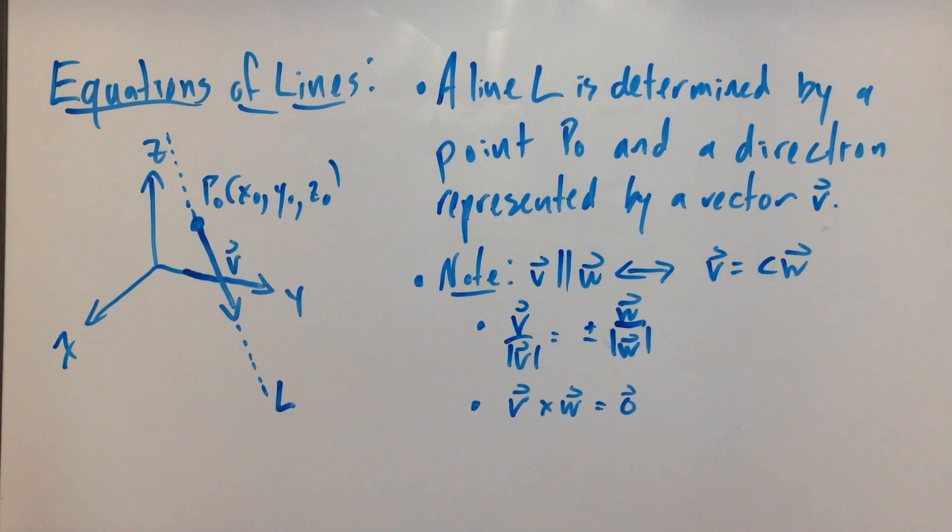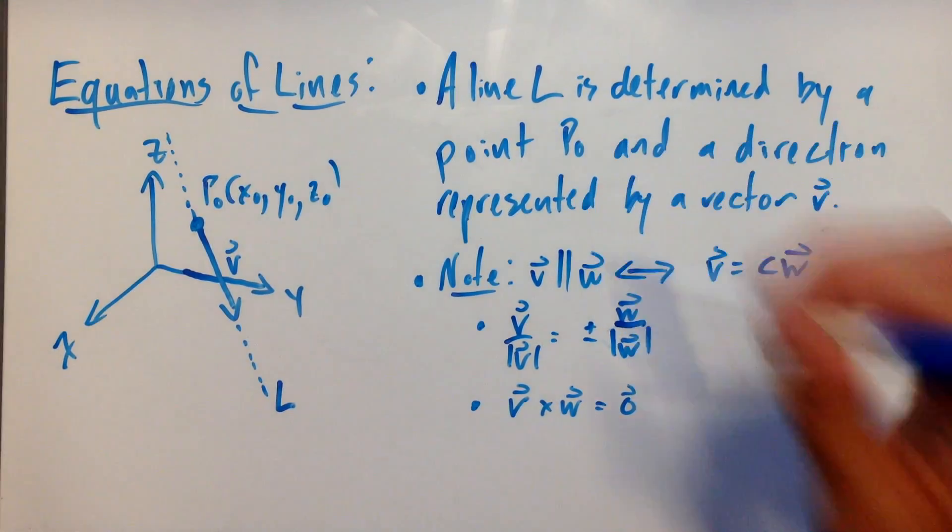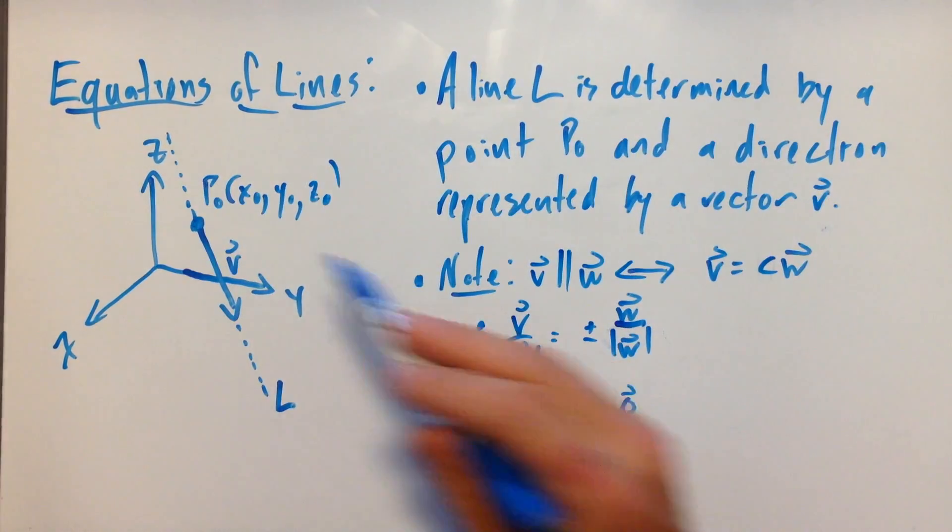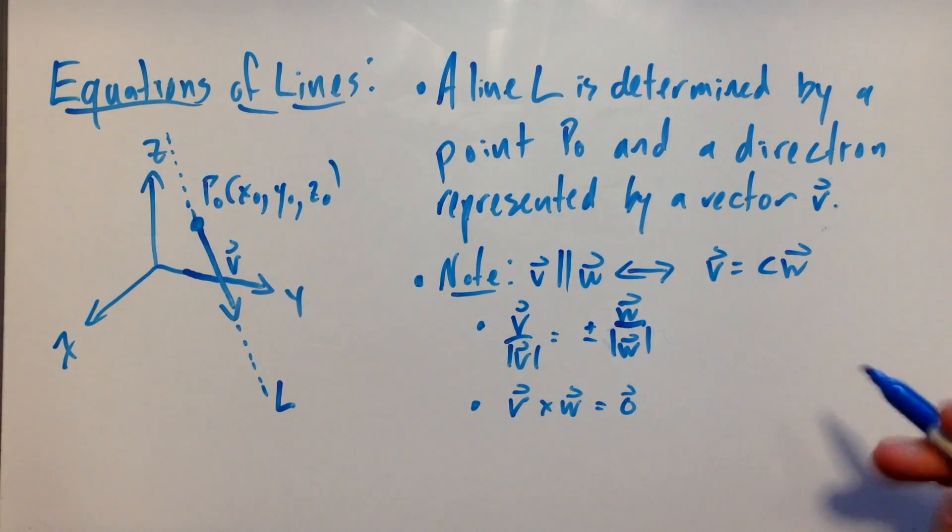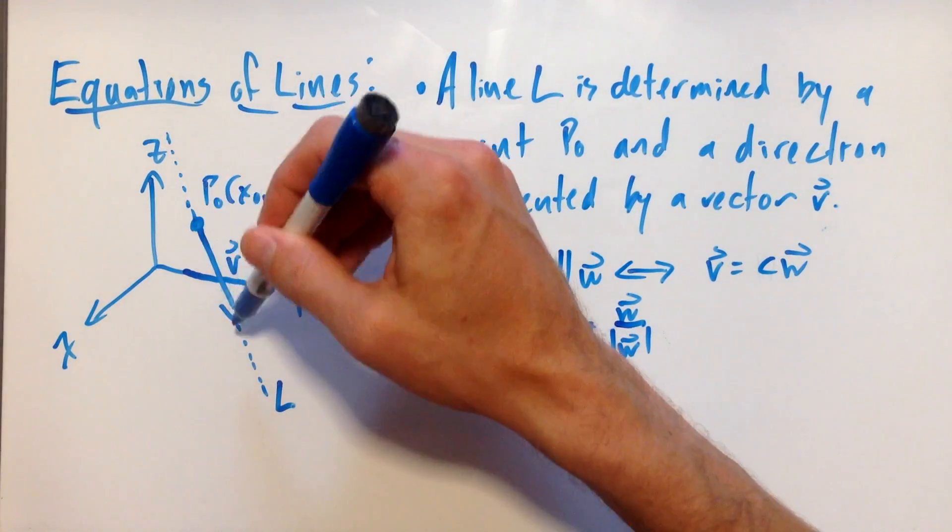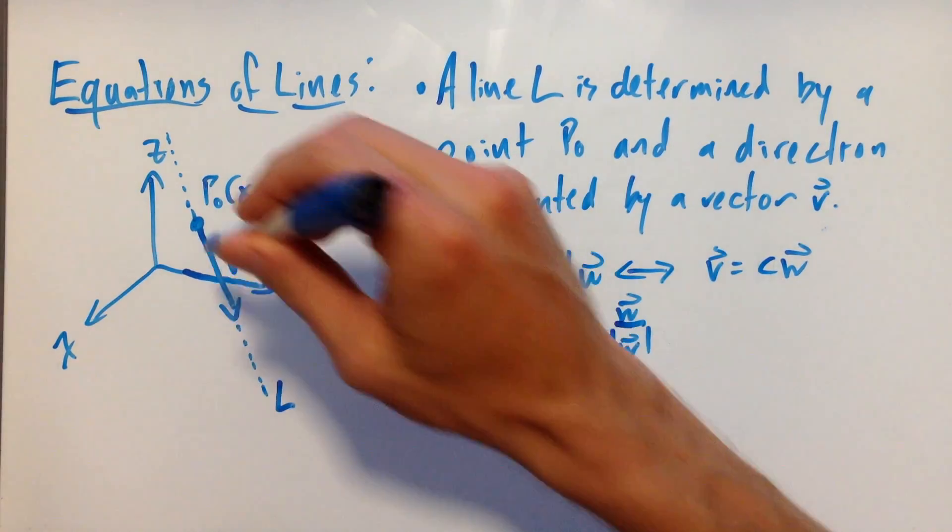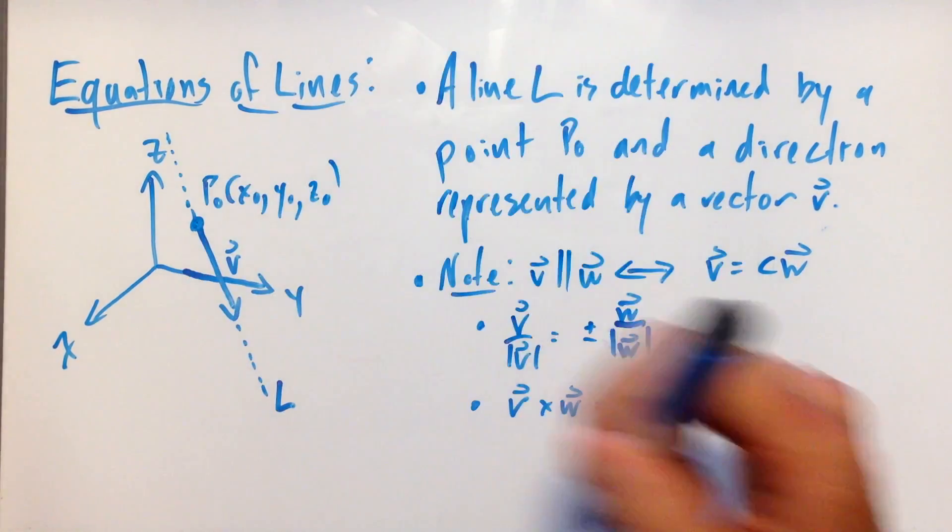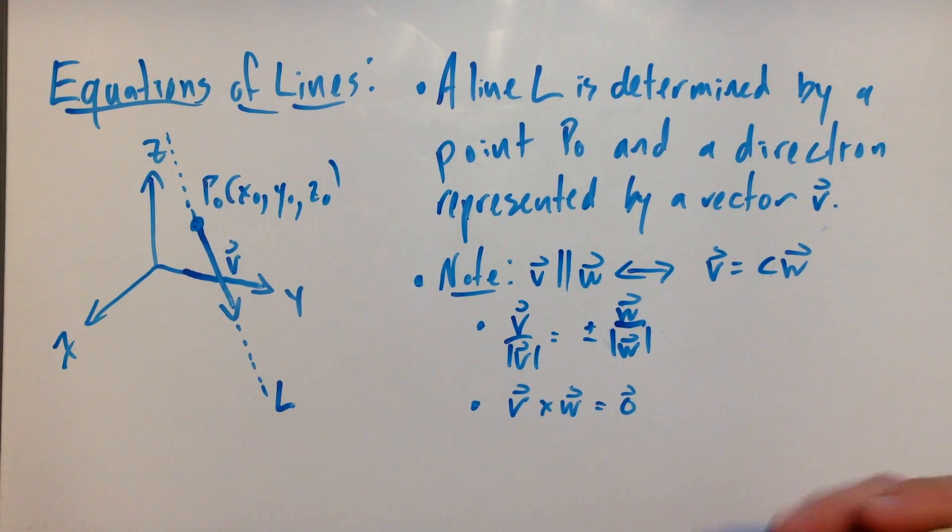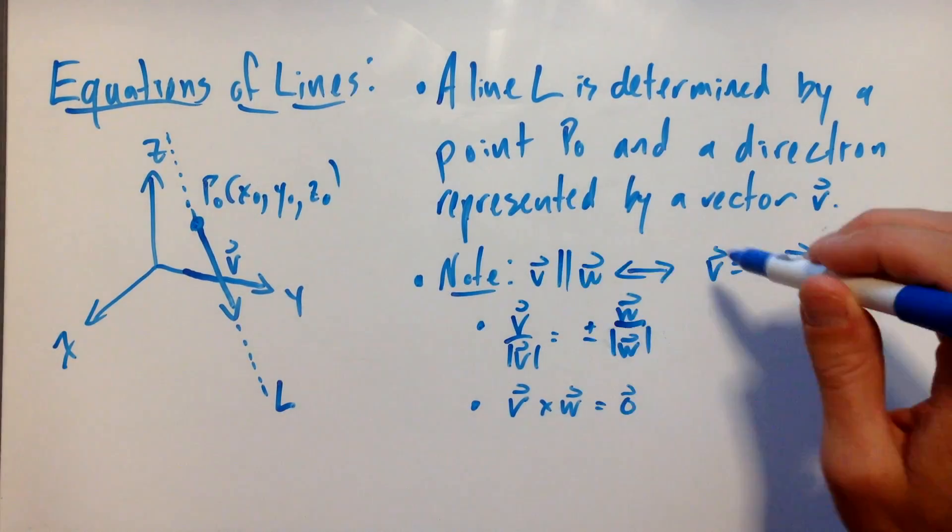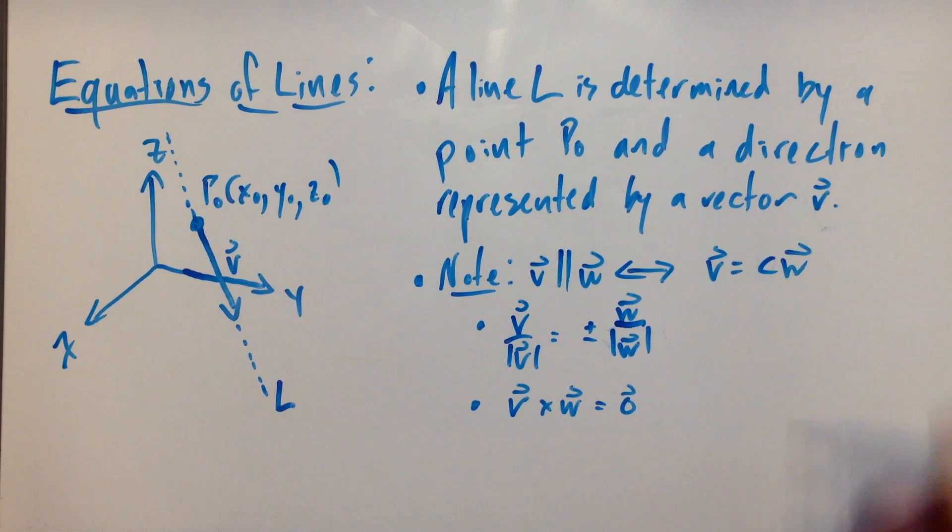A line is determined by two things: a point P0 with coordinates (x0, y0, z0), and a direction which is represented by some vector v, a displacement vector which represents the movement from point P to another point on the line.